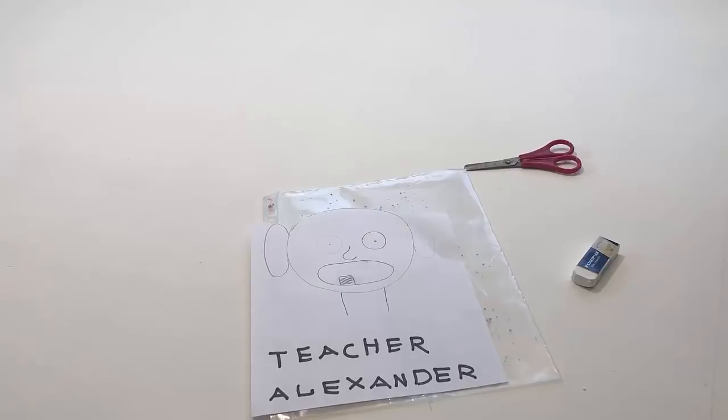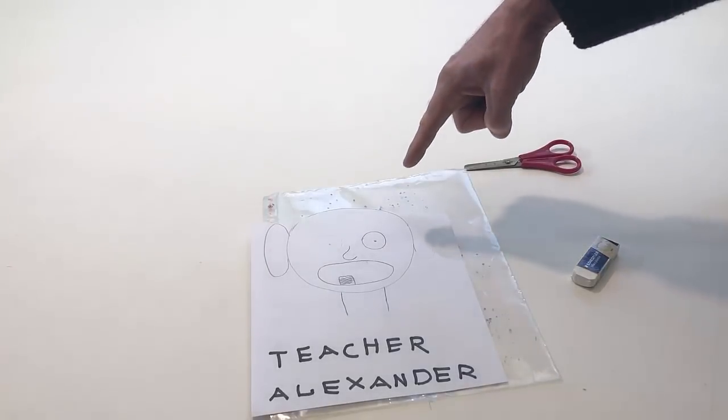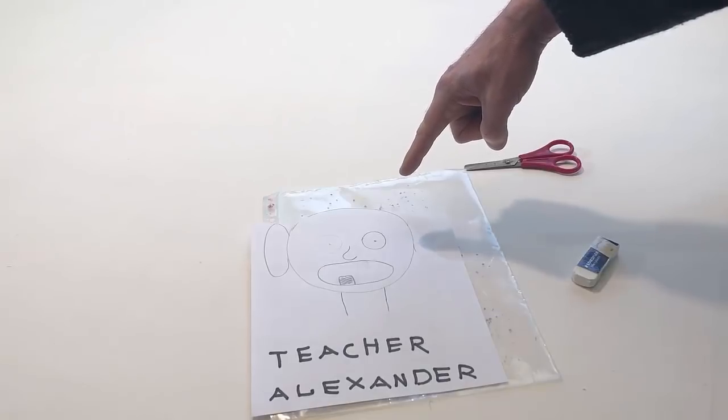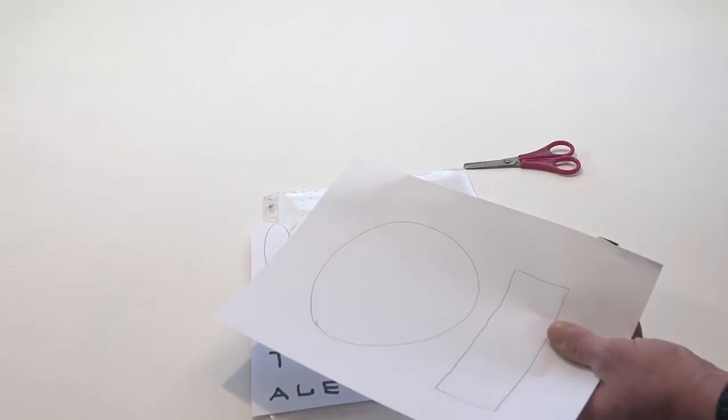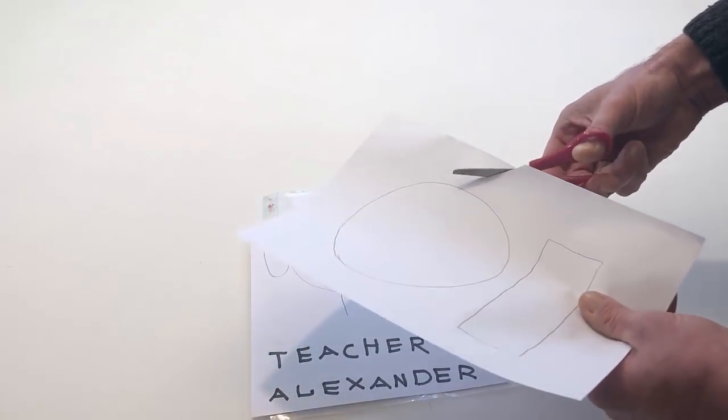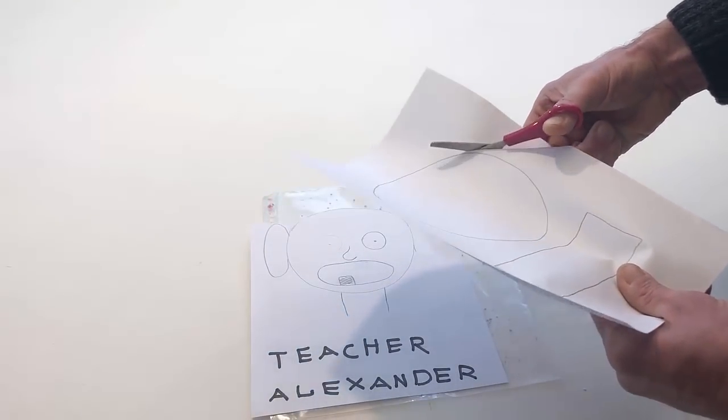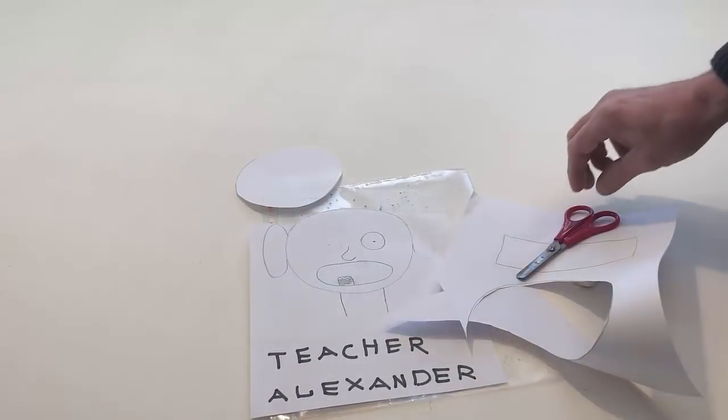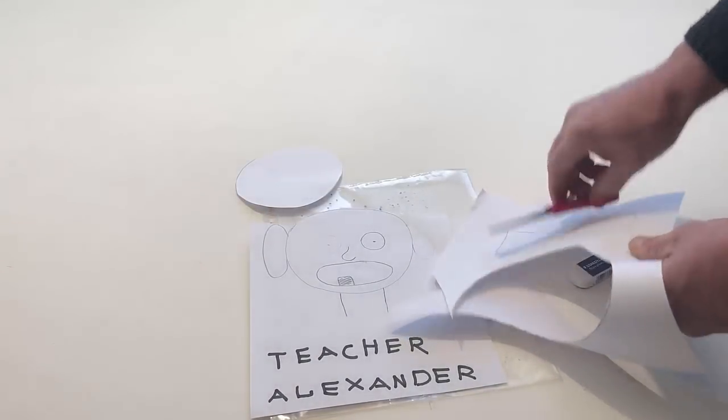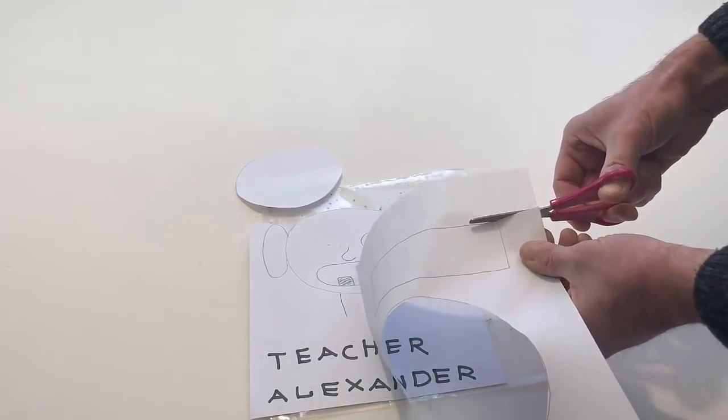Point to my head. Take the other piece of paper with the circle and the rectangle on it. Cut out the circle. Cut out the rectangle.